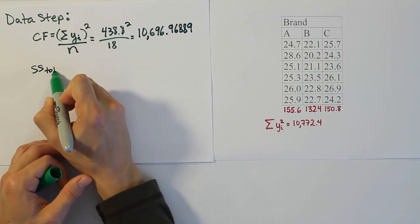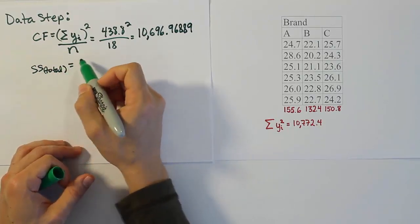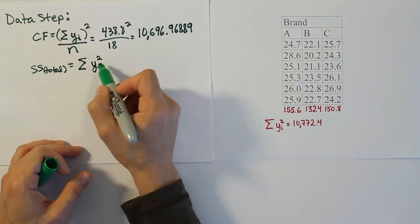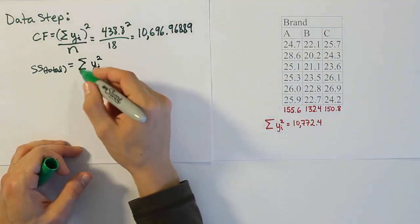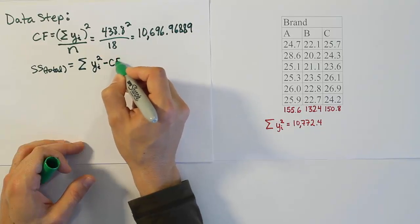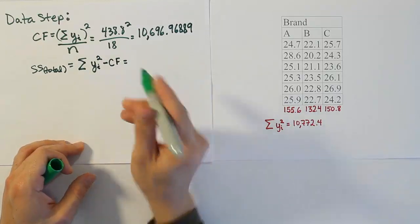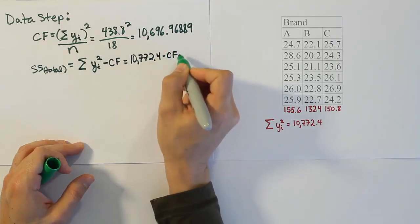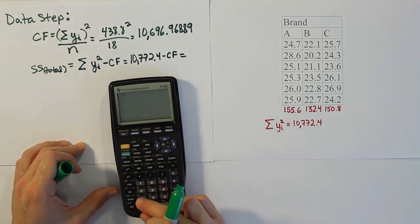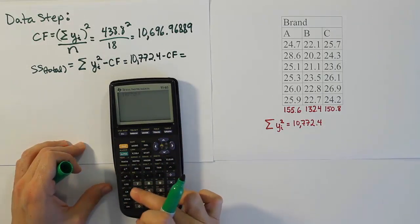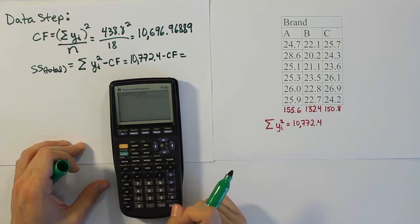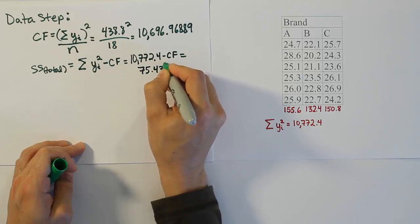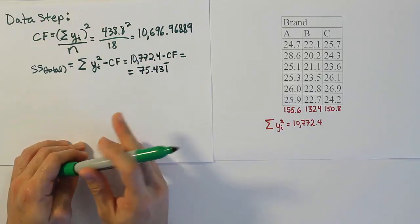The next step is the total sum of squares. We square every item in the data table and sum them, then subtract the correction factor. That quantity has been provided as 10,772.4. So the total sum of squares is 10,772.4 minus 10,696.96889, which gives us 75.431 repeating. That is our sum of squares total.